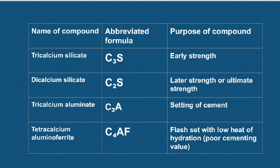The third compound is tricalcium aluminate, called celite. Its abbreviated formula is C3A. Three CaO and one Al2O3 mix together to form C3A. It is responsible for early setting of cement.